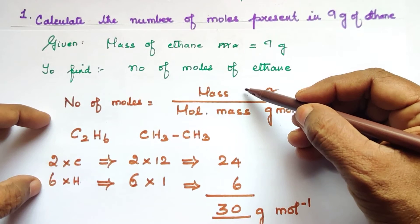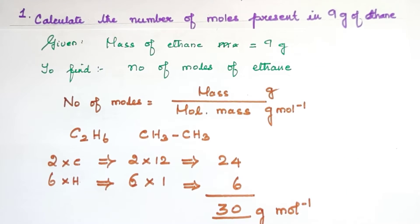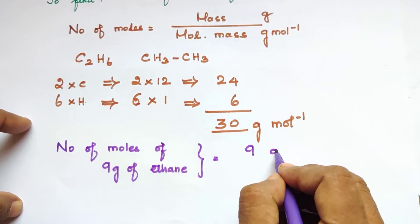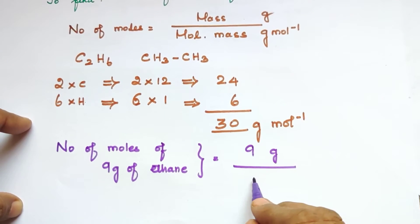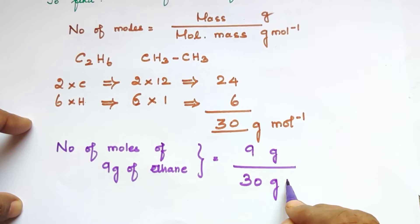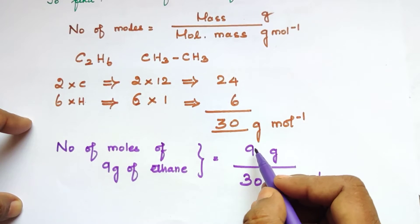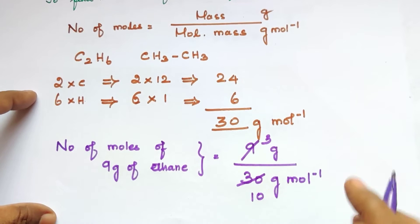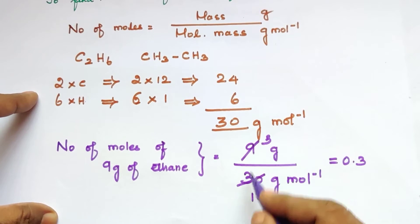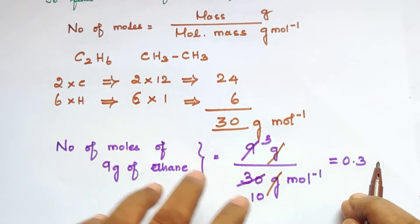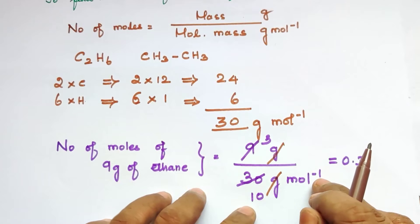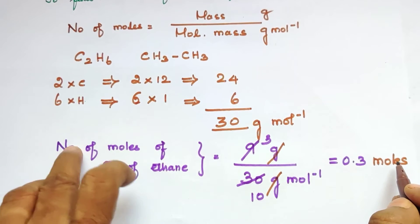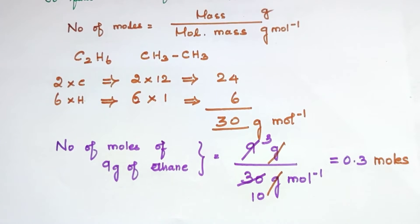Now we substitute into the formula. Number of moles = mass / molar mass = 9g / 30 g/mol. Cancelling: 9/30 = 3/10 = 0.3. The units: grams cancel with grams per mole, leaving moles. So the number of moles of ethane is 0.3 moles. Very simple.